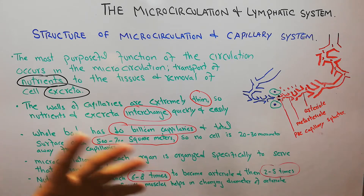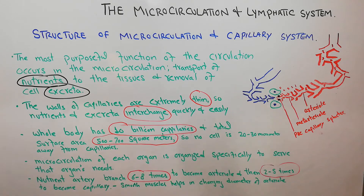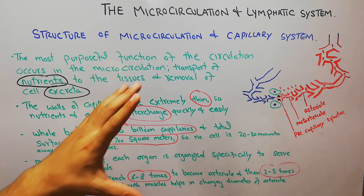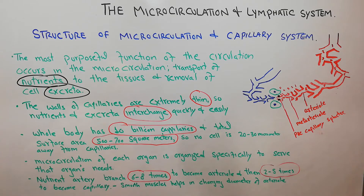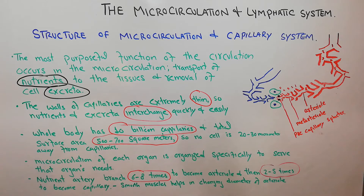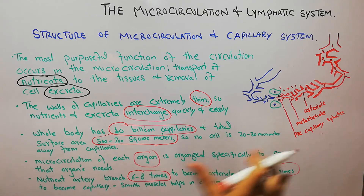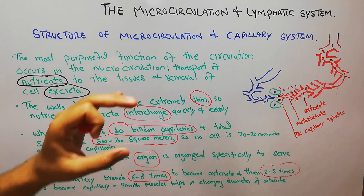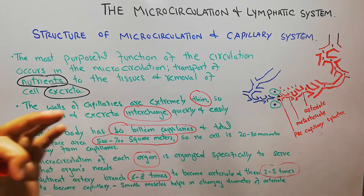This ensures that each and every cell of the human body receives nutrients and has its excreta removed. To achieve this, the structure of each and every organ is specifically made, and the microcirculation of each organ is organized to serve that organ's needs. For example, in the kidneys, liver, and intestine, each organ has a specialized set of microcirculation specific to it.